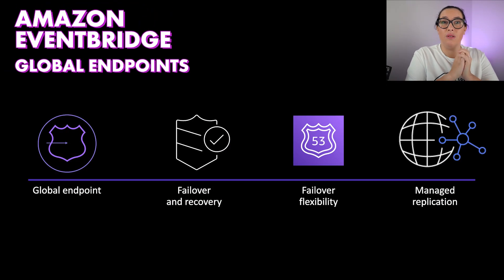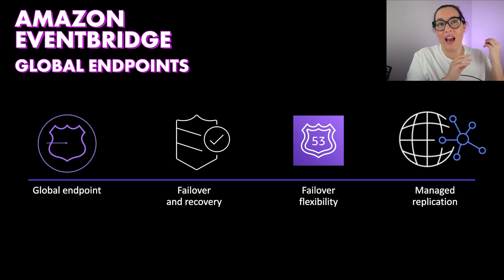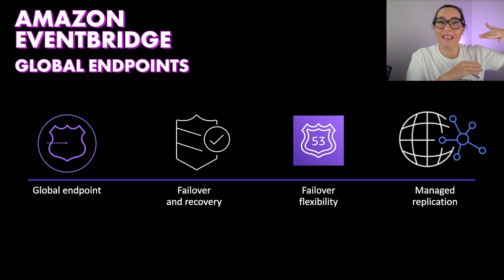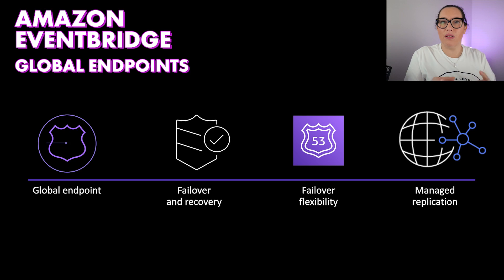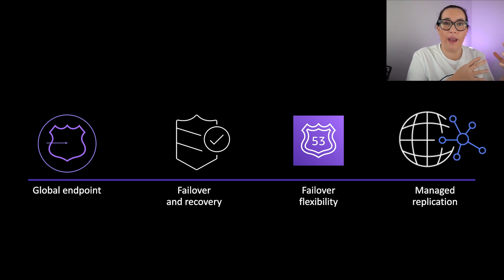Global Endpoints provides a global endpoint at the DNS level using Route 53. I have a whole video on Route 53 in the description. The idea is to have this Global Endpoint at the DNS level so it doesn't depend on a specific region where your applications are putting the events. Then based on Route 53 health checks, EventBridge will handle the failover.